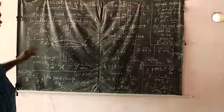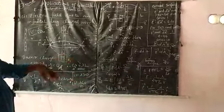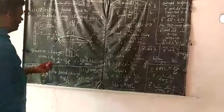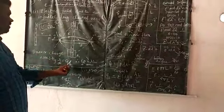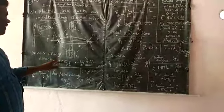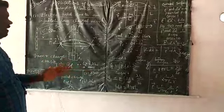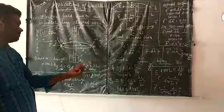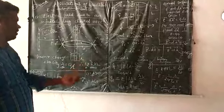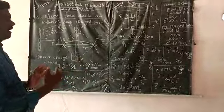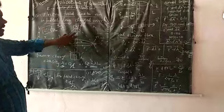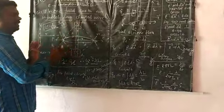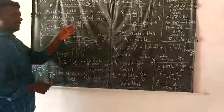If the linear charge density lambda is greater than zero (positive), the electric field acts outward from the linear wire. If lambda is less than zero (negative), meaning the wire carries negative charge, the electric field lines act towards the charged wire. So if the charge distribution is positive, the electric field acts outward; if negative, the electric field acts inward towards the wire.